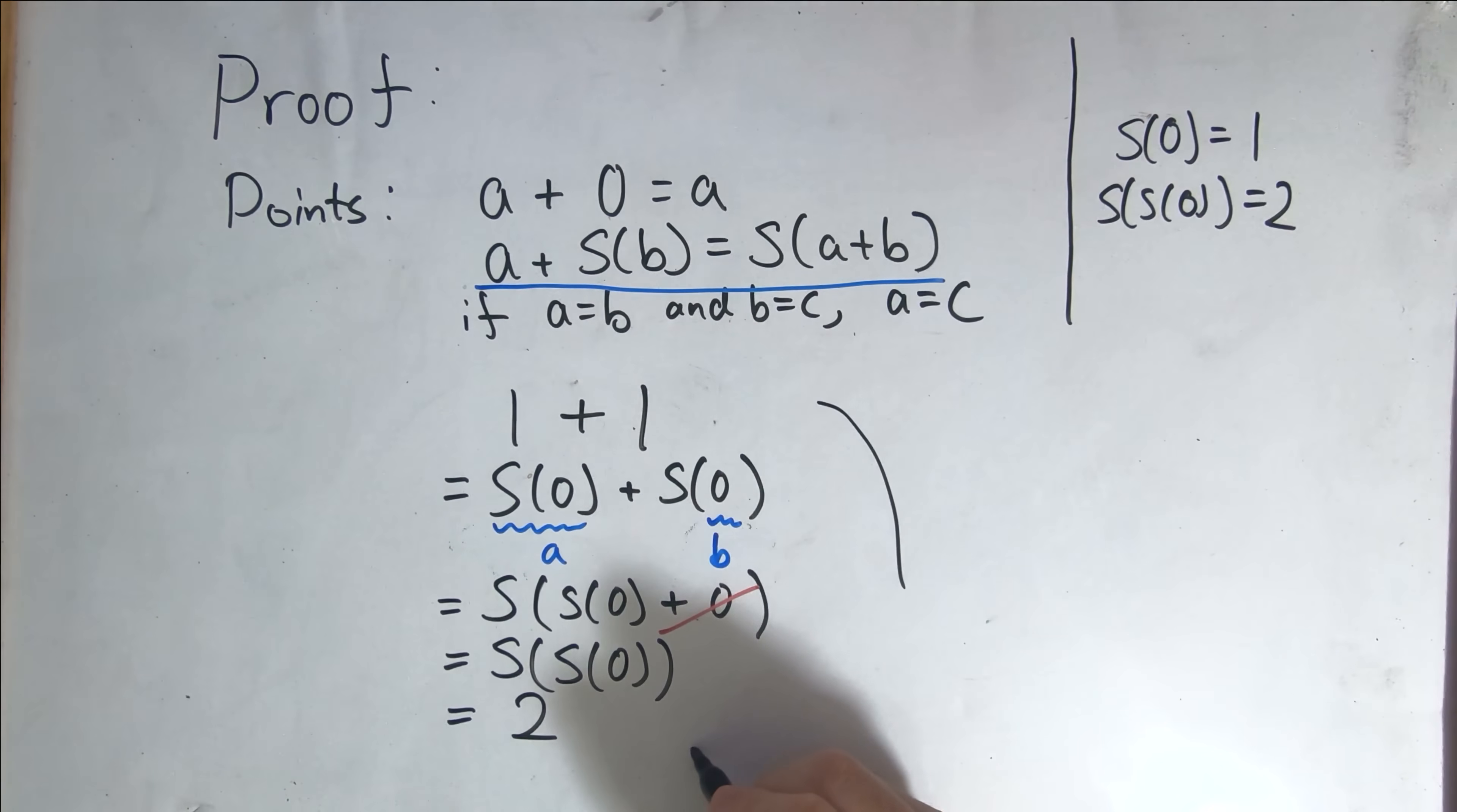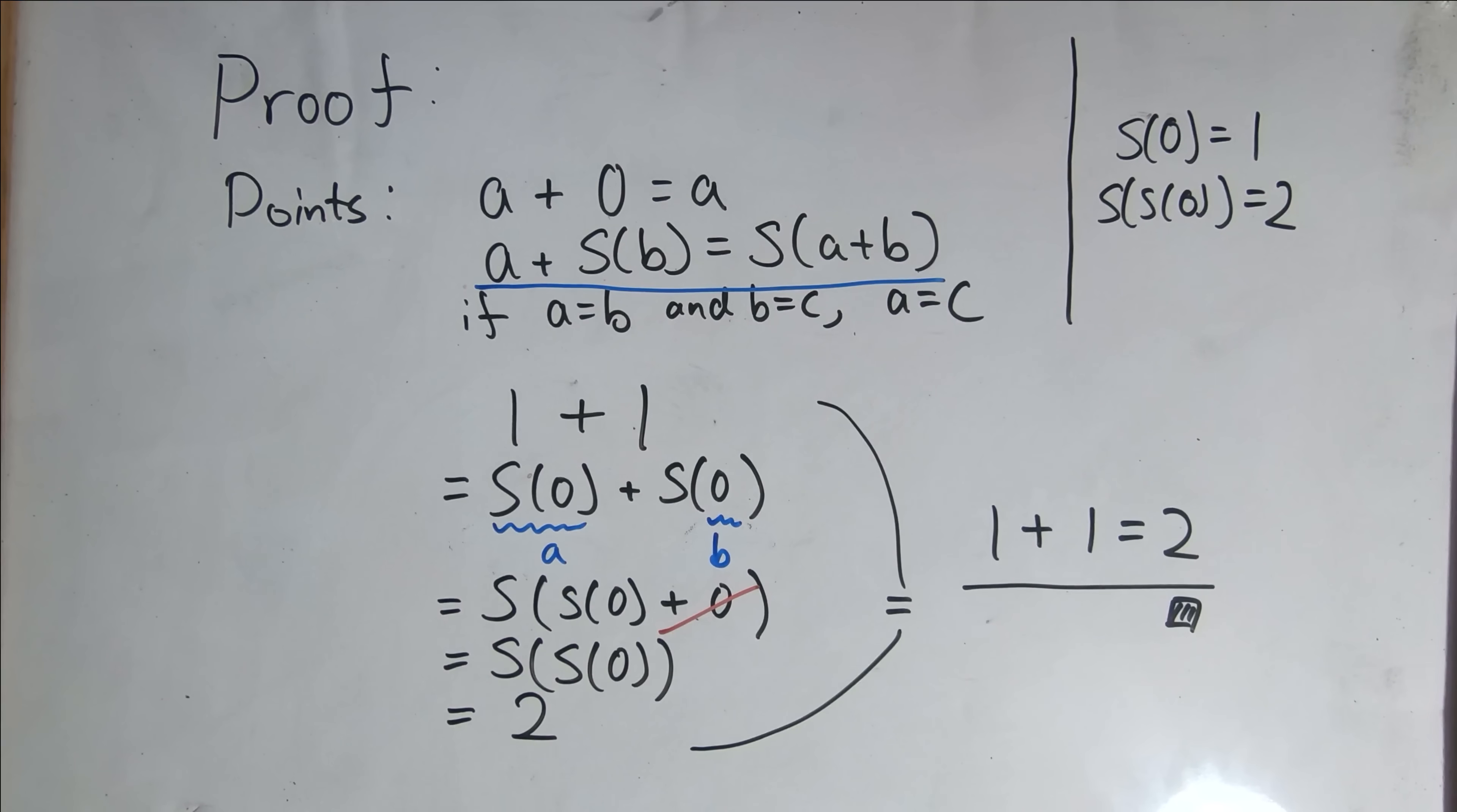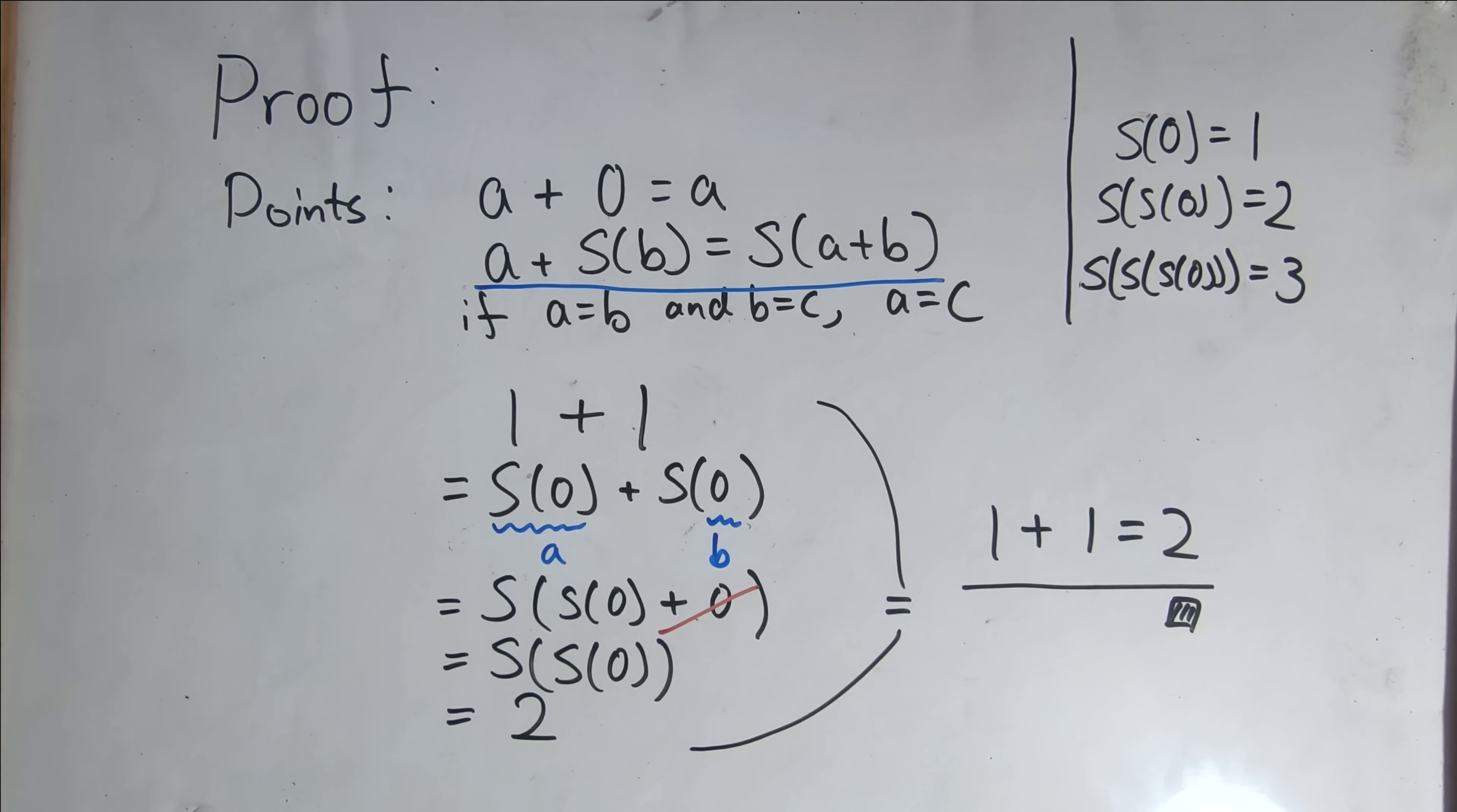Therefore, these two can be connected by an equal sign, meaning that one plus one equals two, and we have finished our proof. And actually, now that we have proven that one plus one equals two, we can prove other simple additions as long as we define each number in terms of a successor of some other number. So say we write the successor of the successor of the successor of zero to be equal to three, then with a similar method, we can prove that one plus two equals three.